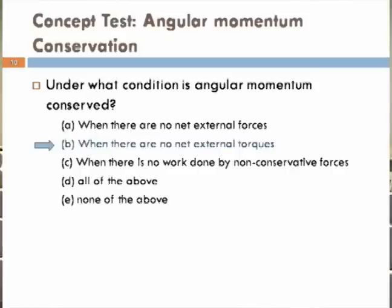Welcome back, and now for the answer to the concept test. If you chose B, you are correct, because when there are no net external torques acting on the system, the angular momentum is conserved. This is an analogy with the conservation of linear momentum, where when there is no net external forces acting on the system, linear momentum is conserved. Notice that A is not correct, because there may not be any net external force on the system but the net external torque may still be non-zero. Because if two forces are equal and opposite and they are not passing through the same point, the net force on the system is zero but the net torque may not be zero. Angular momentum is conserved only when there are no net external torques acting on the system.